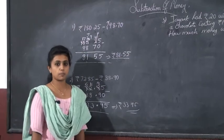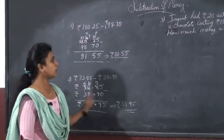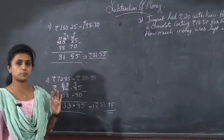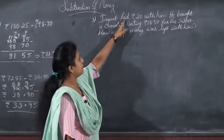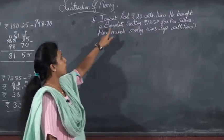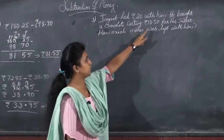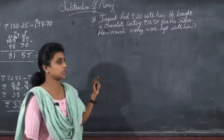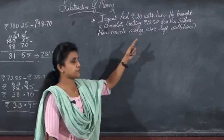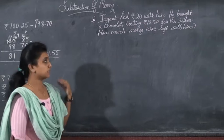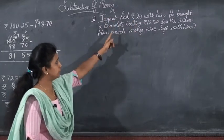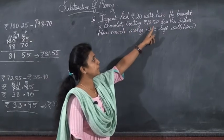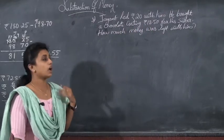Okay, now let us do one problem, word problem based on subtraction. Look at here. Jaypal had 20 rupees with him. He bought a chocolate costing rupees 18.50 paisa for his sister. And how much money was left with him? What the question says here? 20 rupees and Jaypal had, Jaypal bought chocolate 18 rupees 50 paisa. And what do you want to find here? Money that left with him.